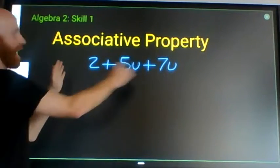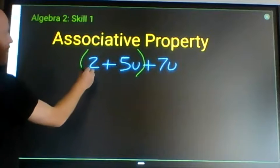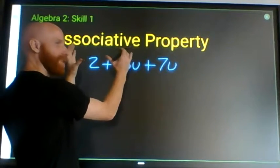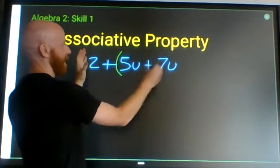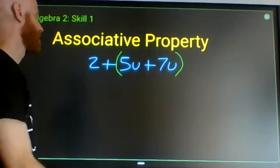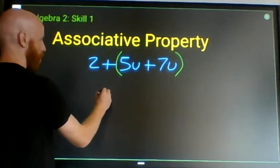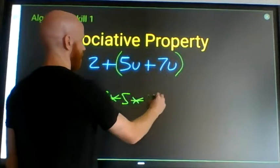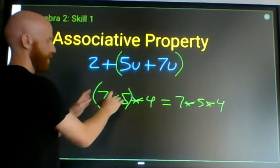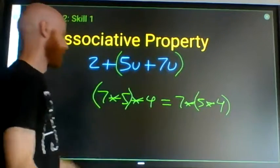Normally we add from left to right, so it's understood that the leftmost operation happens first. However, I will not change the value of the expression if I change which terms are associating together — I could add certain terms first and it will not change the value. The associative property is kind of like the commutative property, but it says you can slide parentheses around if all you're doing is adding or multiplying.